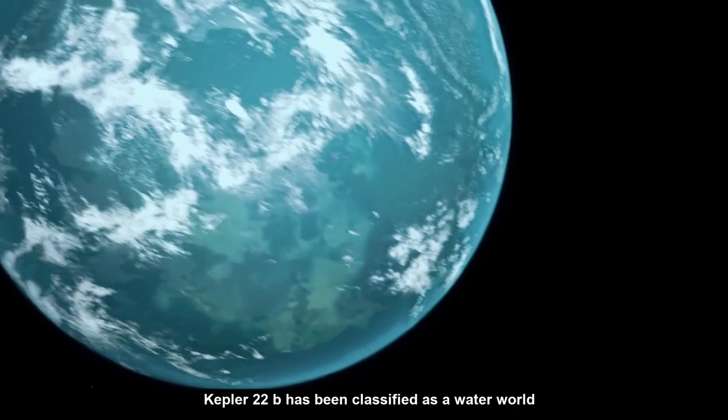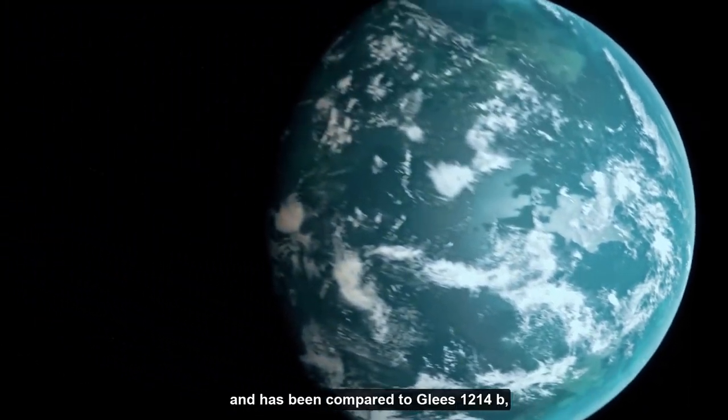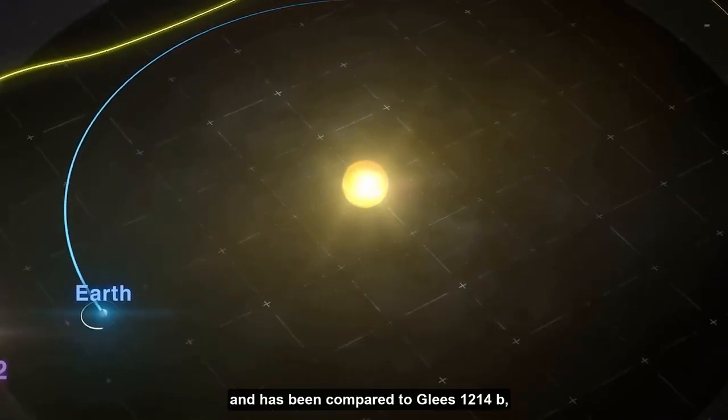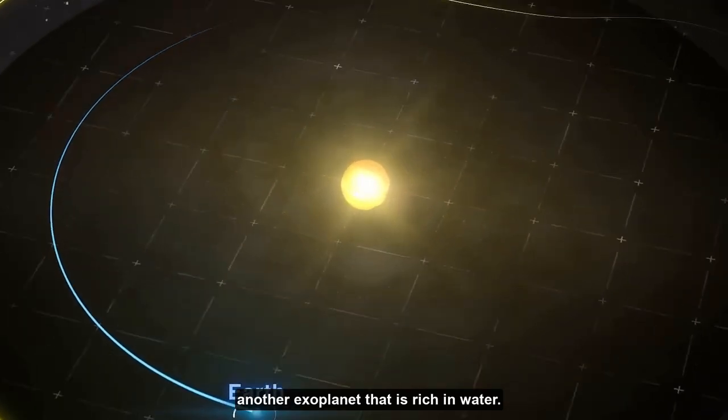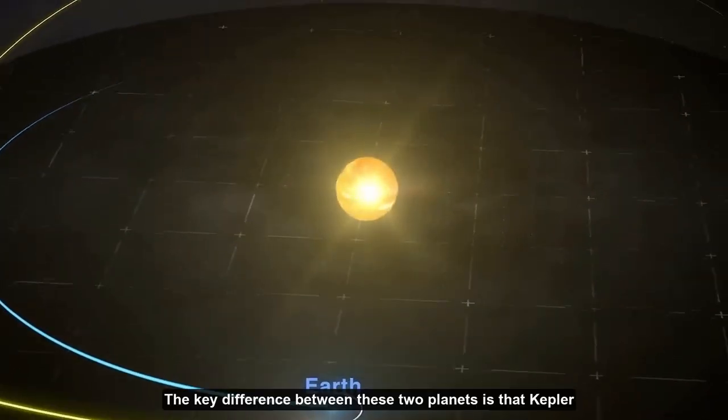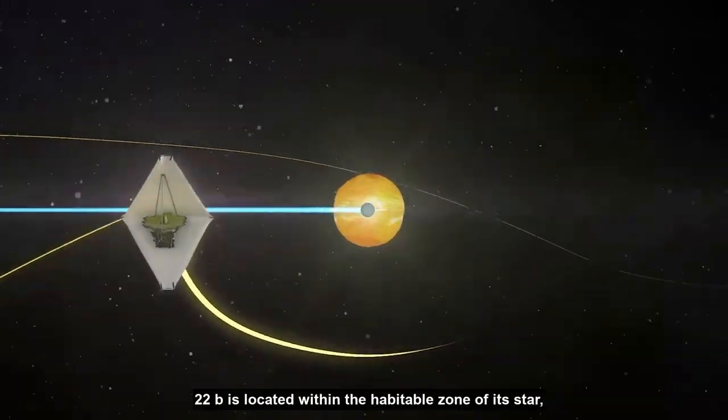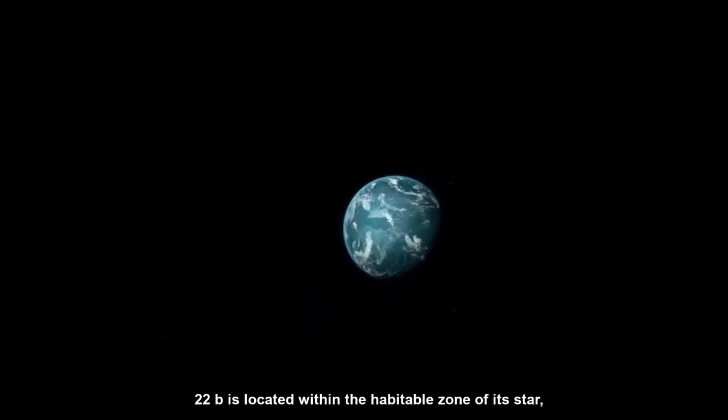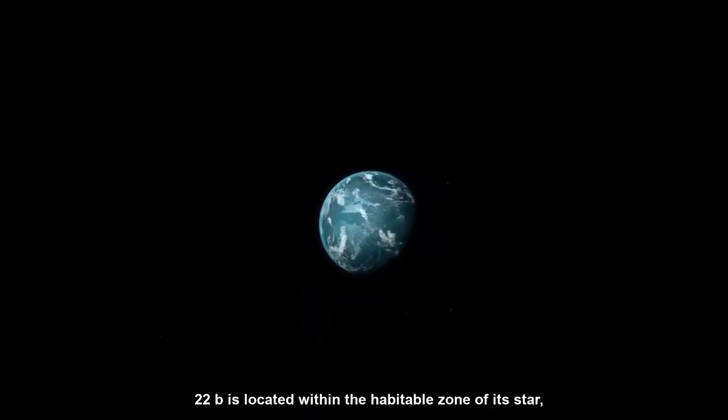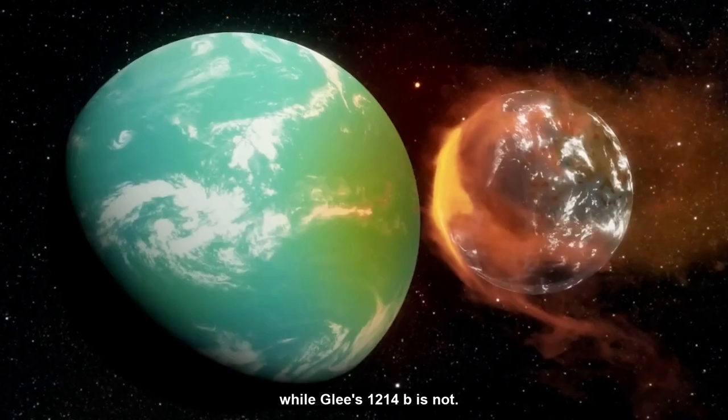Kepler-22b has been classified as a water world and has been compared to Gliese 1214b, another exoplanet that is rich in water. The key difference between these two planets is that Kepler-22b is located within the habitable zone of its star, while Gliese 1214b is not.